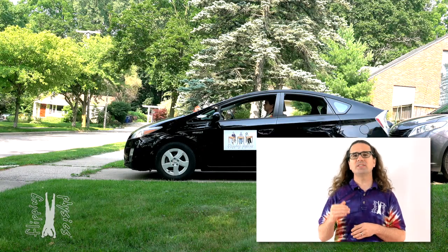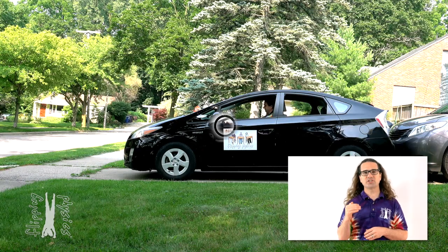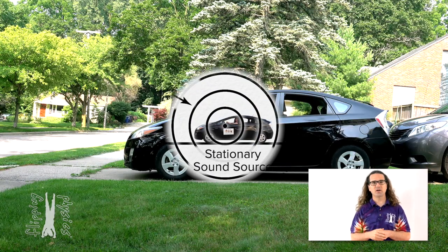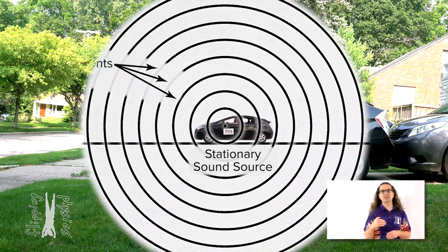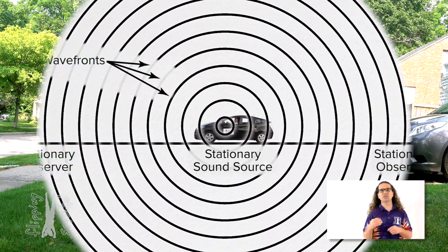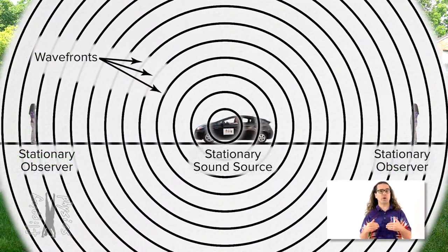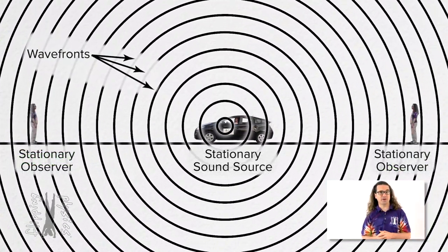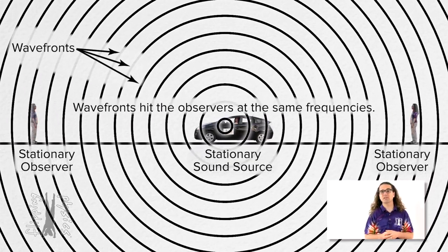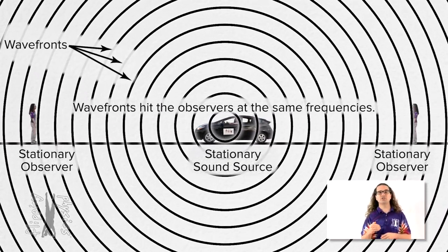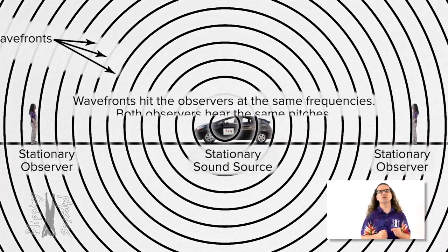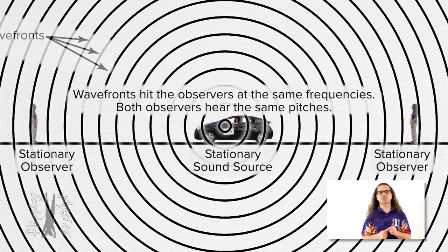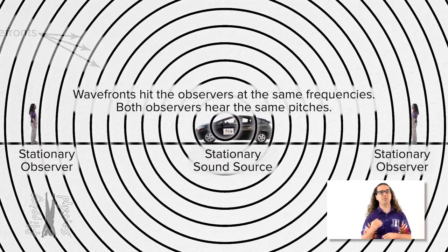To understand the Doppler effect, we need to switch to a stationary car. The sound emitted by the car horn is illustrated using circles which represent wavefronts. Because those wavefronts hit the two stationary observers at the same frequencies, the two observers hear the same pitches.